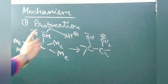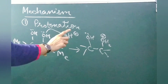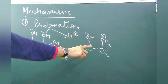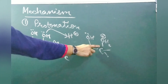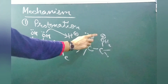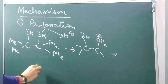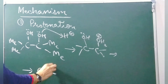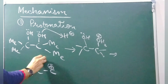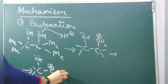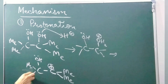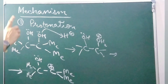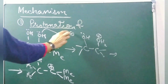So the protonated carbon is here. After protonation, this protonated hydroxyl group is unstable. It is unstable, and this instability will lead to removal of a water molecule. The next step is removal of the water molecule, and formation of a carbocation. So the first step is protonation and formation of carbocation.